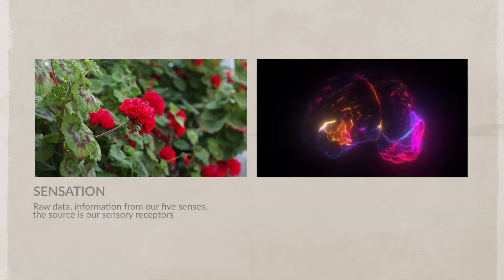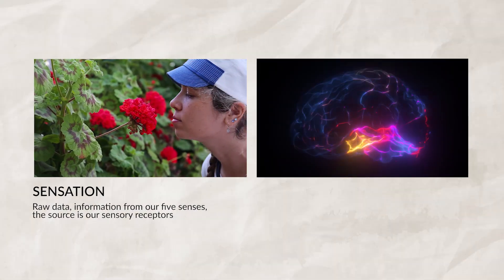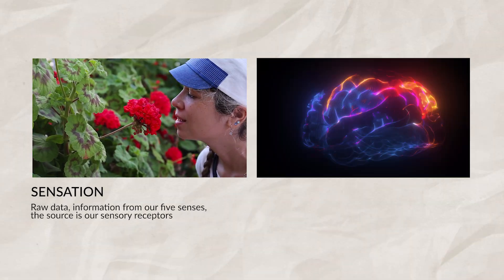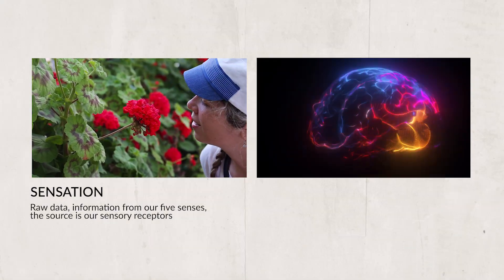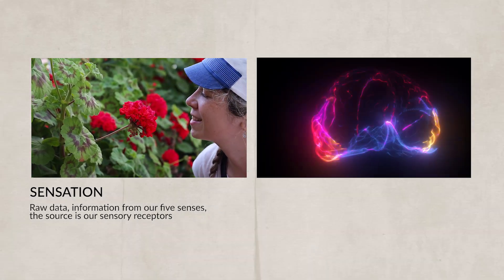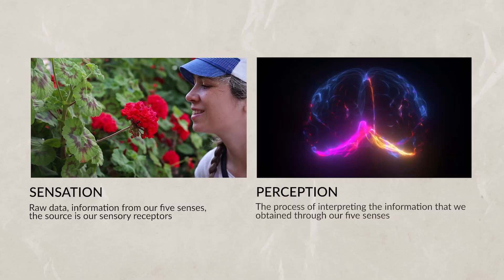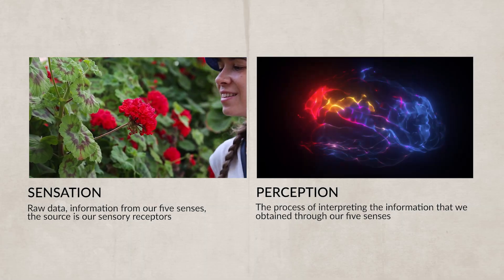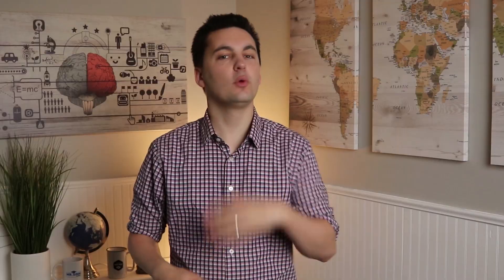When talking about our sensations and perceptions, we have to remember that our sensations are different from our perceptions. Sensation is raw data — information from our five senses. The source is our sensory receptors. Perception, on the other hand, is the process of interpreting the information that we obtain through the five senses.